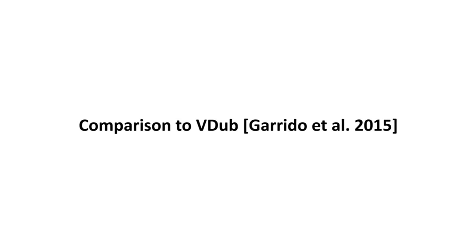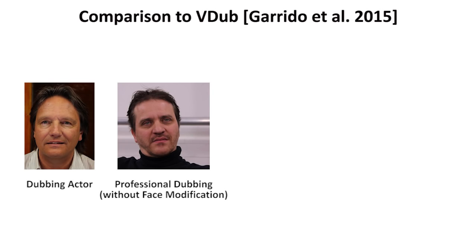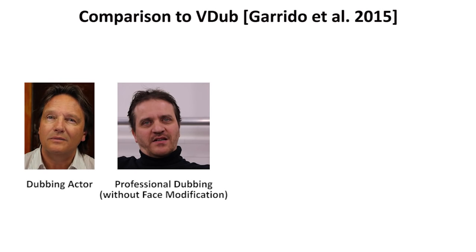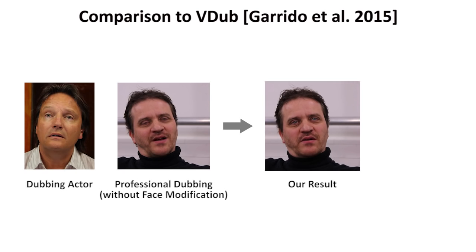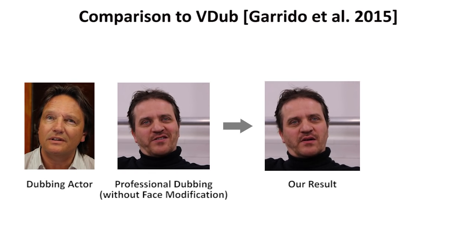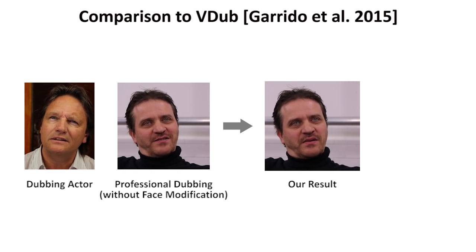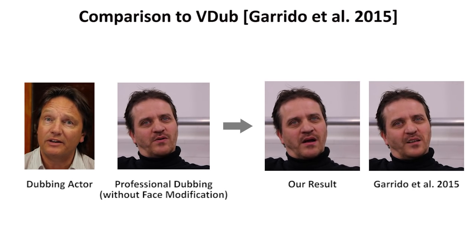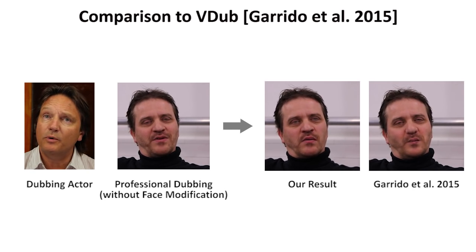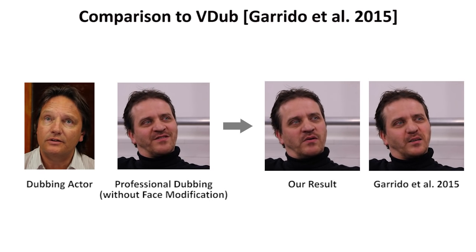Even professional dubbing of foreign language movies, like this German to English dubbing, leads to bad audio-visual alignment. Our approach modifies the face to match the new audio track at high quality. In terms of audio-visual alignment and synthesized mouth interior, our results are significantly better than Garrido and colleagues on the right.